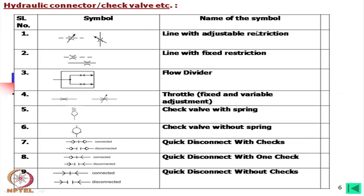This is a throttle or fixed or variable adjustment — these are usually used to control flow. This is a check valve with spring return, and this is a check valve without spring return. This is again a quick disconnect: one symbol shows connected and another shows disconnected. In a circuit, if the connected symbol is shown it means the line is connected by quick connector; if the disconnected symbol is shown, it normally remains disconnected.